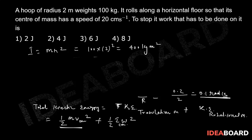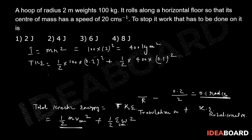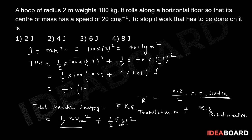Putting in the values: total KE equals half times 100 times (0.2)², plus half times 400 times (0.1)². That is half times 100 times 0.04, plus half times 400 times 0.01. Taking common factor: half times 100 gives us 0.04 contribution and half times 400 gives 4 times 0.01. Simplifying: 100 times 0.04 equals 8, divided by 2 gives 4 joules total kinetic energy.